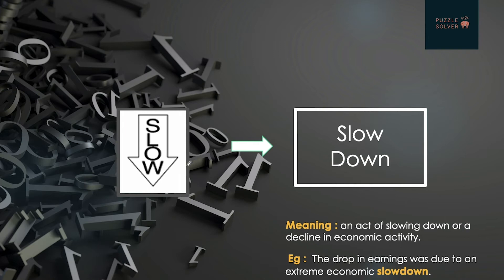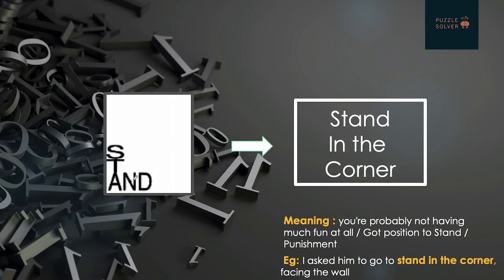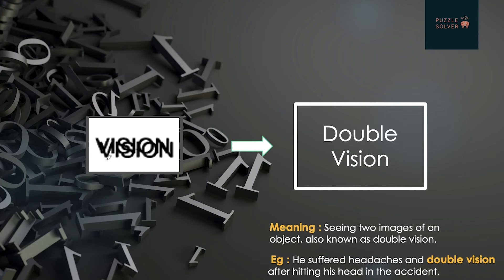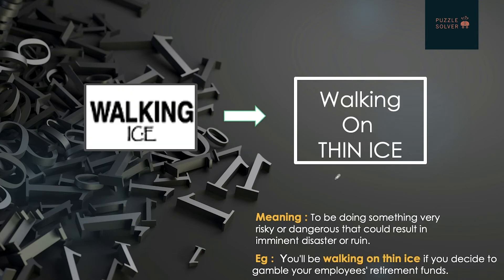Next, the word is 'invaders' but there is a space present between, so it would be 'space invaders'. Next, a down arrow is there and 'slow' is written inside the down arrow, so it will be 'slow down'. Next, the word 'stand' is placed in one corner of the box, so it would be 'stand in the corner'. Next, 'vision' is written here but it is not clear and written two times, so it's 'double vision'.